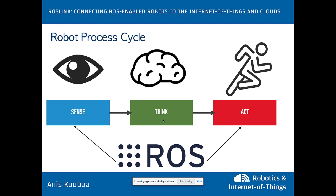ROS has a collection of libraries — for SLAM map building, navigation, and velocity commands — all in a standard way. This allows you to develop the same program for different cameras, motors, and robots in a very abstract and convenient manner.